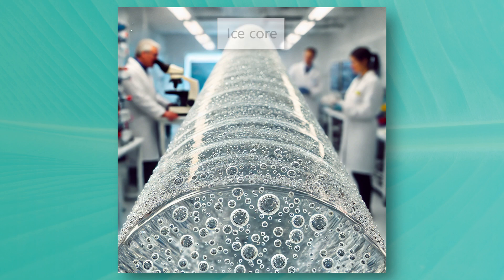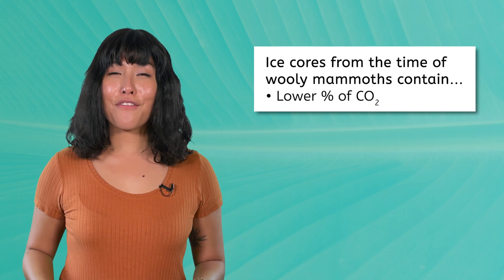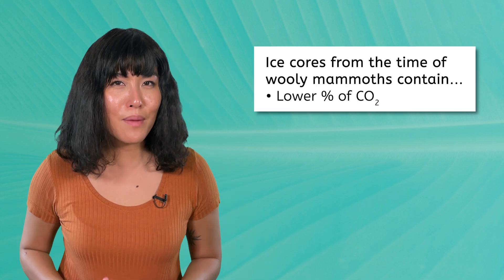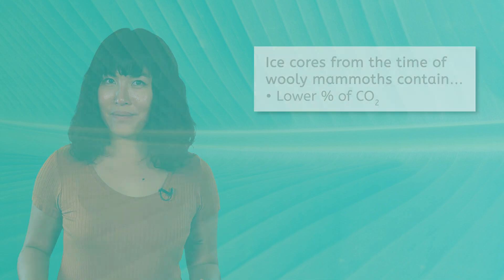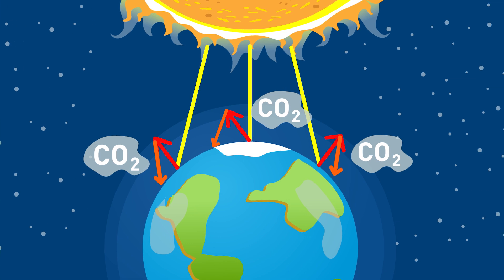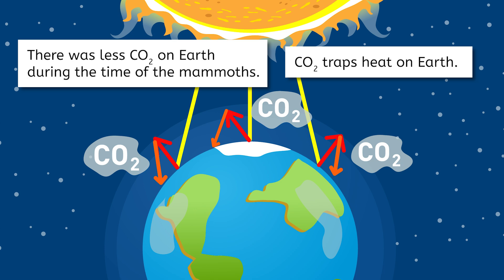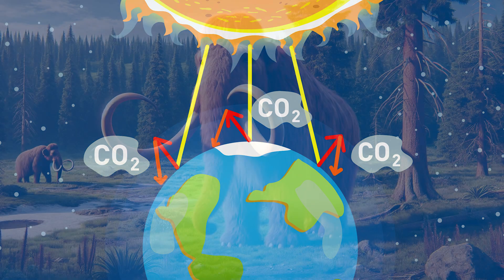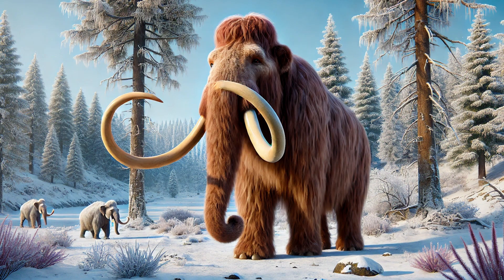By carefully analyzing these ice cores, we can measure the amount of gases like carbon dioxide and oxygen that are trapped in the bubbles they contain. Now let's look at some data from one of these ice cores. Scientists have found that bubbles trapped in the ice from the age of the woolly mammoths contain lower percentages of carbon dioxide compared to what is in our air today. You'll learn more about carbon dioxide in our atmosphere in our next unit, but you may already know that it is a gas that tends to trap heat on Earth, leading to warmer temperatures. And based on the ice core data, there was less of it in the air during the time of the mammoths. So, does this mean that the Earth was warmer or cooler then? Pause the video for a moment and make a prediction. The temperature was colder during the time of the mammoths, which is why it was called an ice age.